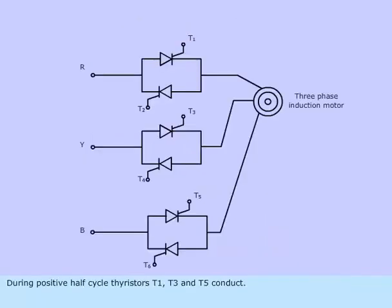During positive half-cycle, thyristors T1, T3 and T5 conduct. During negative half-cycle, thyristors T2, T4 and T6 conduct.